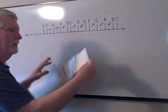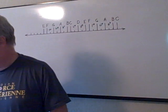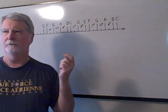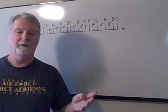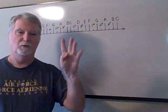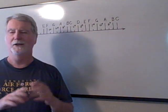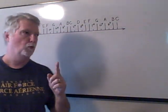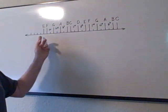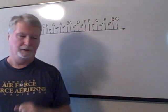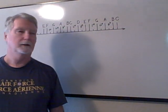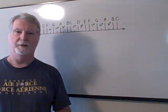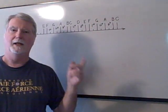The key point is this: the root note, or the one chord, is whatever key you're playing in. In the key of A, A is the one, D is the four, and E is the five. In the key of C, C is the one, F is the four, and G is the five. The pattern slides up and down. Hope that clarifies it — if you have questions post them below. Good luck and keep practicing.